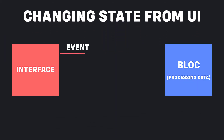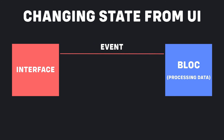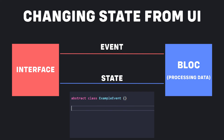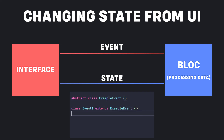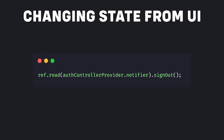Now let's check changing state from UI. Bloc utilizes events to send signals to state objects for it to apply business logic and make changes to the state, meaning a developer needs to create a number of event classes processed by the Bloc object. In RiverPod you access the state object from the UI via reading it from the container using ref.read to call functions that make changes to the state. This is generally used for one-time actions like pressing a button.